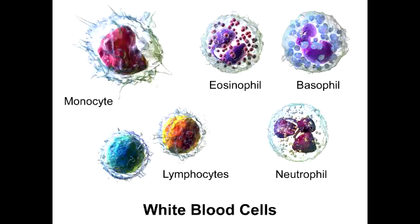What do the large, less numerous granules of neutrophils contain? The large, less numerous azurophilic granules contain acid phosphatase, peroxidase, and beta-glucuronidase.